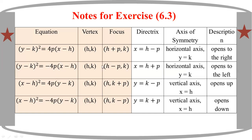If you need the directrix for a vertical parabola, y is equal to k plus p, and y is equal to k minus p.